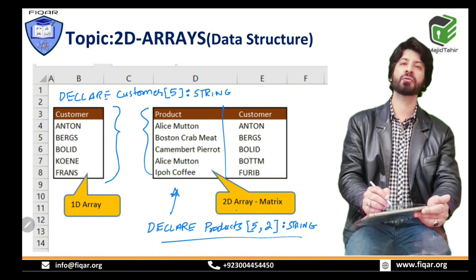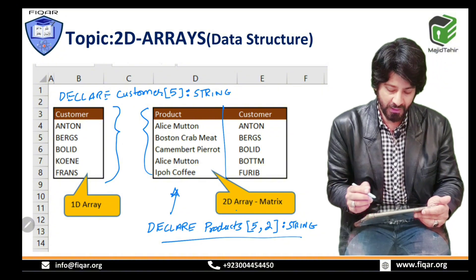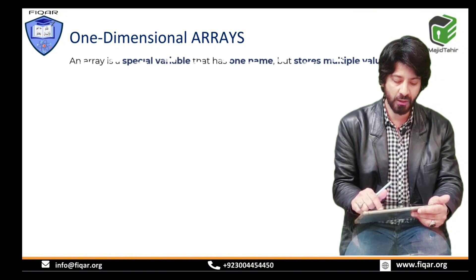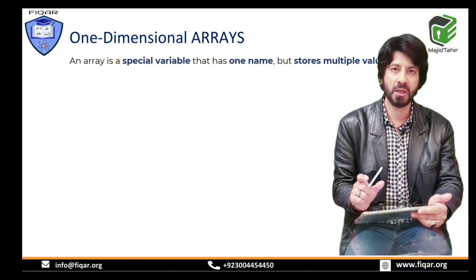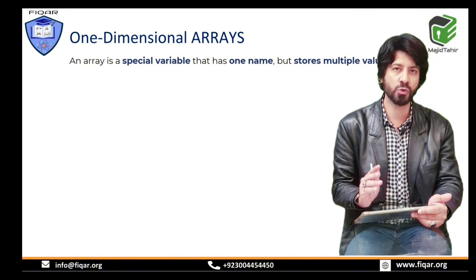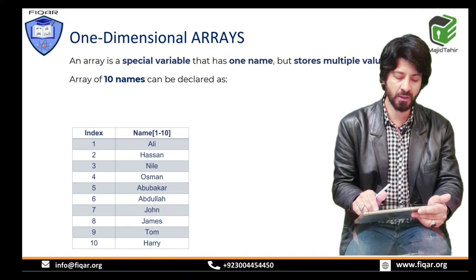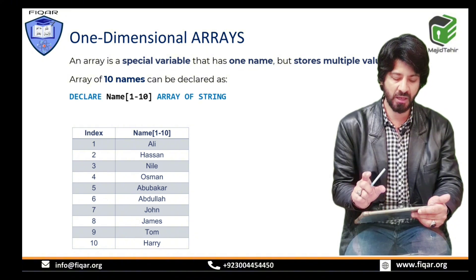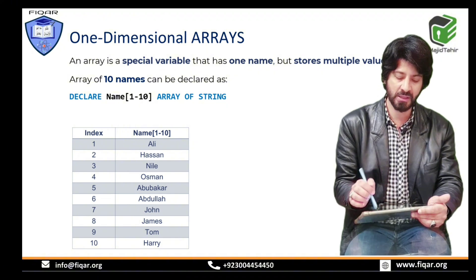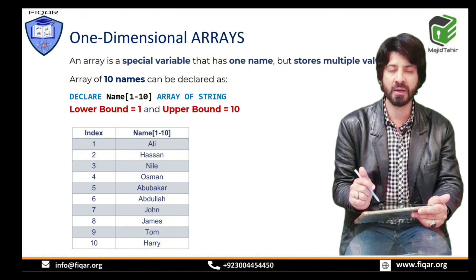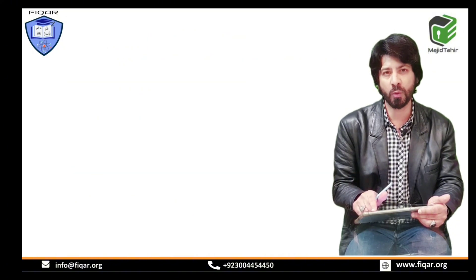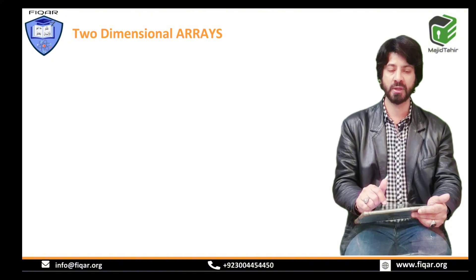A quick reinforcement: an array is a special variable that stores multiple values under one name. For example, an array of ten names can be declared as DECLARE name[1:10] OF STRING. The lower bound is 1 and the upper bound is 10. We covered this in the previous video. Now let's move forward and look at two-dimensional arrays.